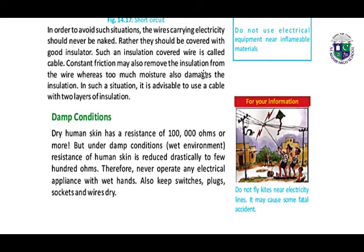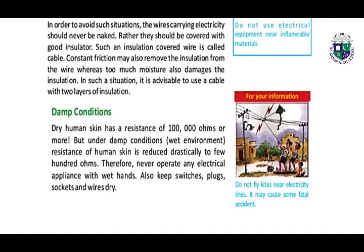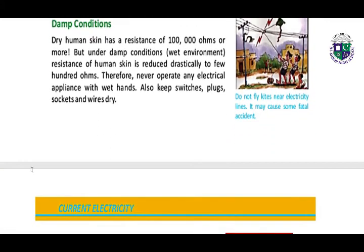Constant friction may also remove the insulation from the wire, and too much moisture also damages the insulation. Dry human skin has a resistance of 1 lakh ohms or more, but under damp conditions and wet environment, the resistance of human skin is reduced drastically to a few hundred ohms. Therefore, never operate any electrical appliance with wet hands.